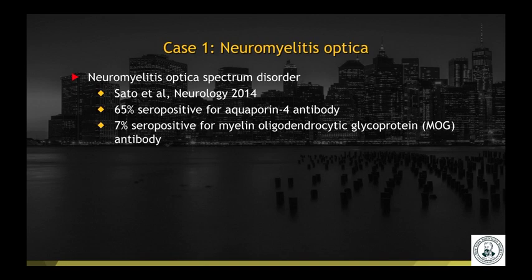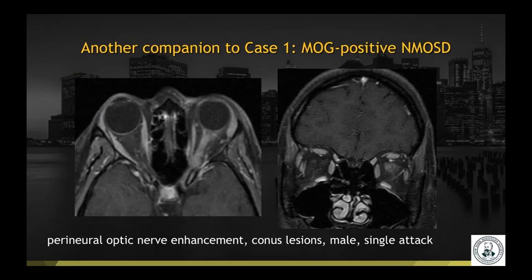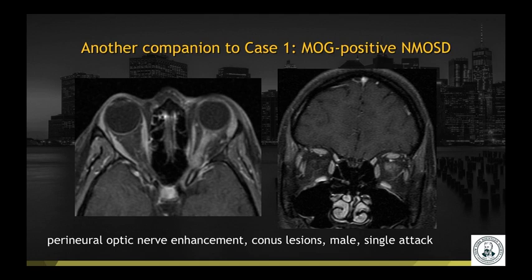In NMO or NMO spectrum disorder, many of these patients have seropositivity for aquaporin-4, but there's also a small subgroup that are seropositive for MOG antibody — myelin oligodendrocytic glycoprotein. A companion case of MOG-positive NMO spectrum disorder shows perineural optic nerve enhancement. Rather than enhancement of the optic nerve itself, you often see this ill-defined fuzzy enhancement along the optic nerve. Patients often have cord lesions that are lower down, involving the conus. In terms of demographics, they're more likely to be male and tend to have a single attack rather than multiple attacks.